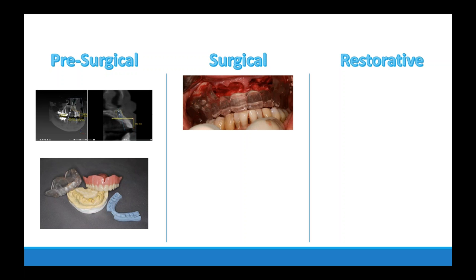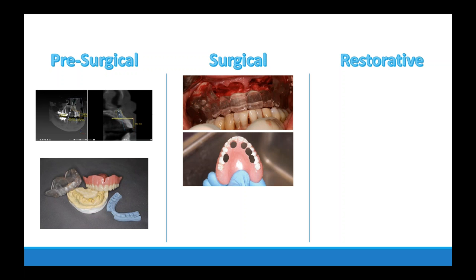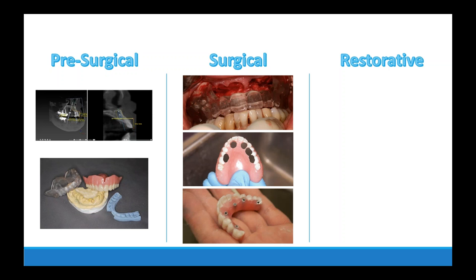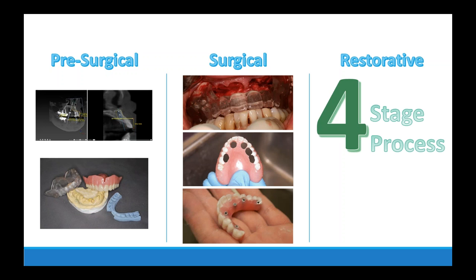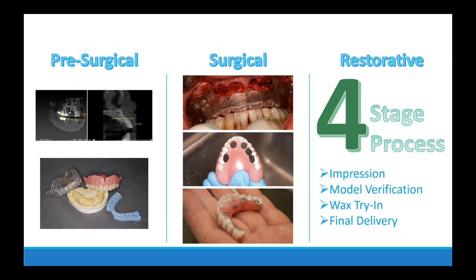In the surgical phase, we use the clear duplicate as our blueprint to establish not only the height of bone reduction needed, but also where the screw access holes are going to be. We cut a trough in the lingual of the prosthetic guide and use that to get our multi-unit abutments arranged so screw access holes are in a good position. We reduce everything down until we have a temporary prosthesis, so that in the restorative phase we have a very simple four-stage process. We front-load as much work as possible into treatment planning and the surgical phase, so restorative clinicians have the most straightforward process possible.